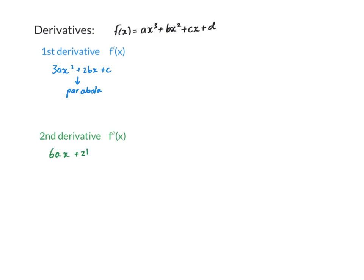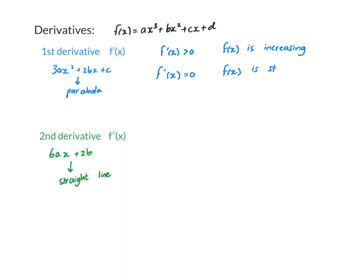The second derivative will be 6ax + 2b, which makes a straight line. Now, if your first derivative is positive, it means that the original graph is increasing, because the derivative represents the gradient. If your first derivative equals zero, that is where your original graph is stationary. If your first derivative is negative, it means your original graph is decreasing.